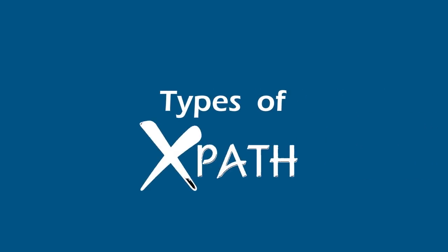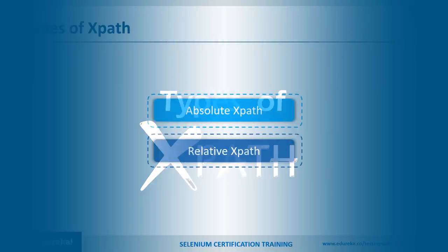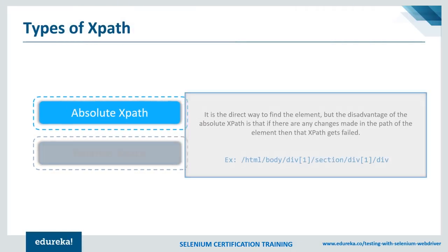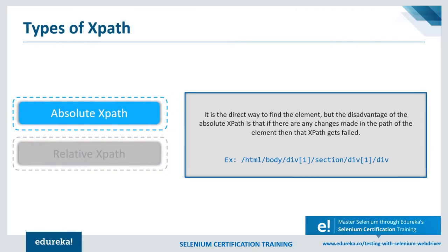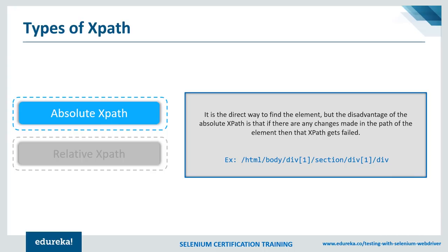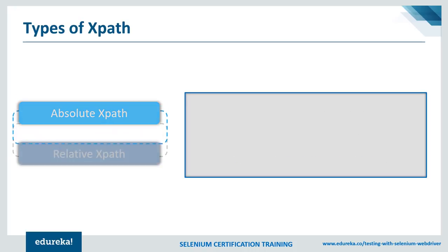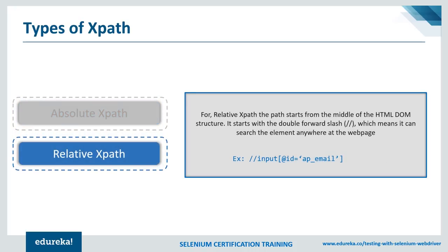That brings us to the types of XPath — absolute and relative XPath. Absolute XPath is a direct way to find an element, but its disadvantage is that if there are any changes made to the XPath of the element, then that XPath fails. Relative XPath starts from the middle of the HTML DOM structure, starts with a double forward slash, and can search for the element anywhere on the web page. Now let's understand what a single slash means when used inside the XPath.